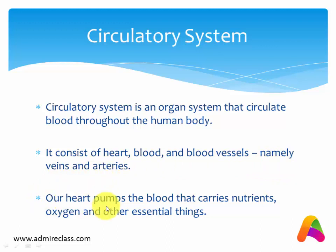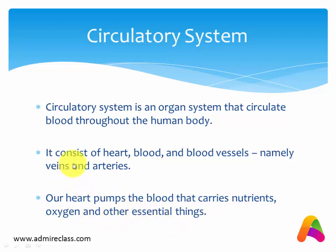Our heart pumps the blood that carries nutrients, oxygen, and other essential things. So the circulatory system is an organ system that circulates blood throughout our body, consisting of the heart, blood, and blood vessels.